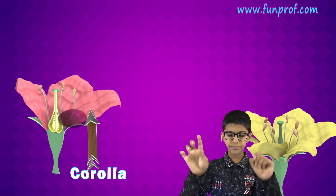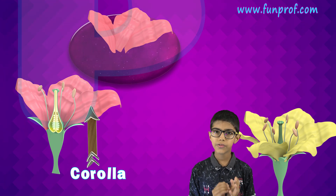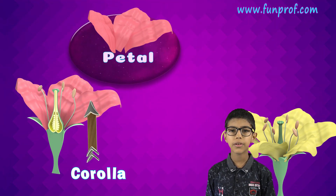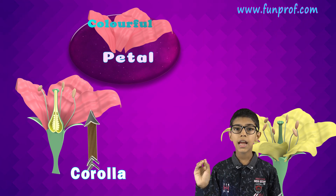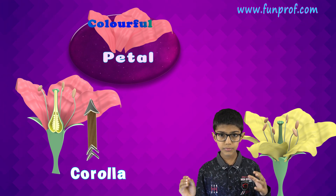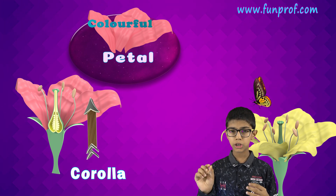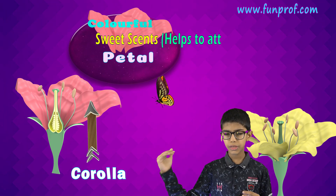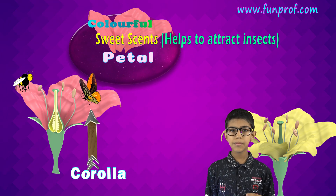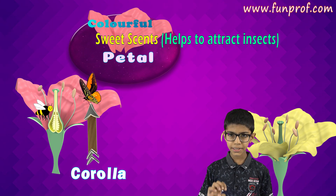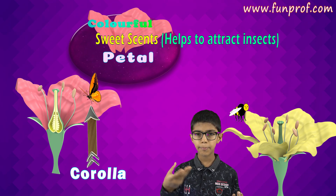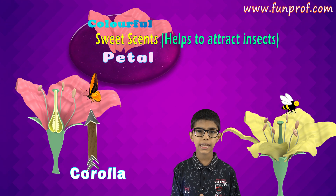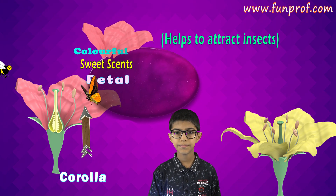Next is the corolla — it is the second wall of a flower. It consists of all the petals of a flower. These petals are colorful and they also have sweet scents, so bees and insects come and take the pollen grains from them to another flower. This helps in the process of pollination.